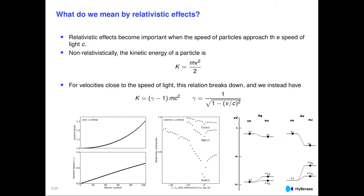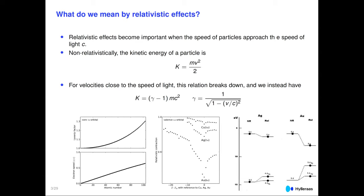As the S and P orbitals contract, they also screen the nuclear charge better, so D and F orbitals in general will expand. This is, for instance, the origin of the color of gold: we have a destabilization of the 5D orbitals and a stabilization of the 6S orbitals. Whereas in a non-relativistic framework the color of gold would basically be the same as silver — colorless — in the relativistic picture, gold has the familiar color we know.